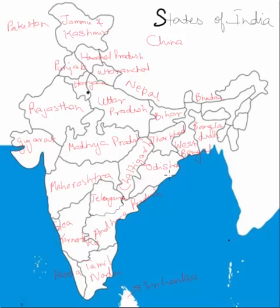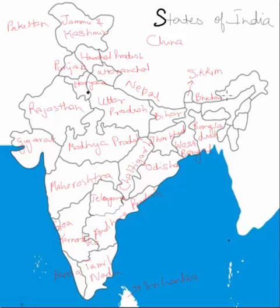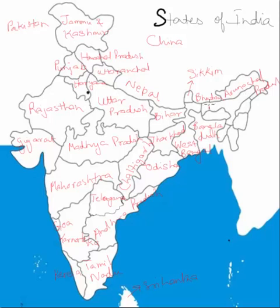We've covered almost all states except the northeastern ones. These are called the seven sisters. The state between Nepal and Bhutan with West Bengal to its south is Sikkim. The largest state in the absolute northeast, shaped like a U and bordered mostly by China and Myanmar, is Arunachal Pradesh.